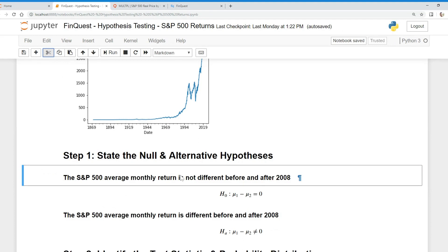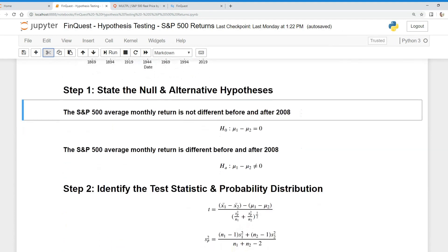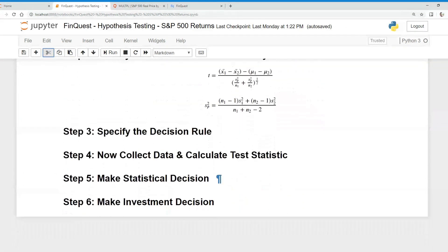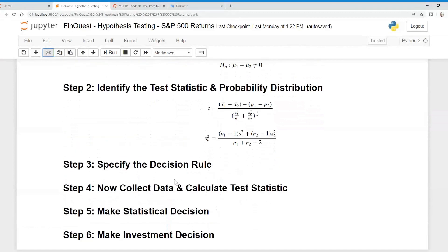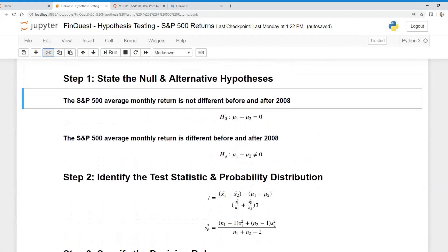You'll notice we have several steps. Step 1 is state the null and alternative hypotheses. Step 2 is identify the test statistic and probability distribution. Step 3 is specify the decision rule. Step 4 is collect the data and calculate the test statistic. Then 5 and 6 we'll make the statistical decision and our investment decision. Notice we don't even collect the data until step 4.